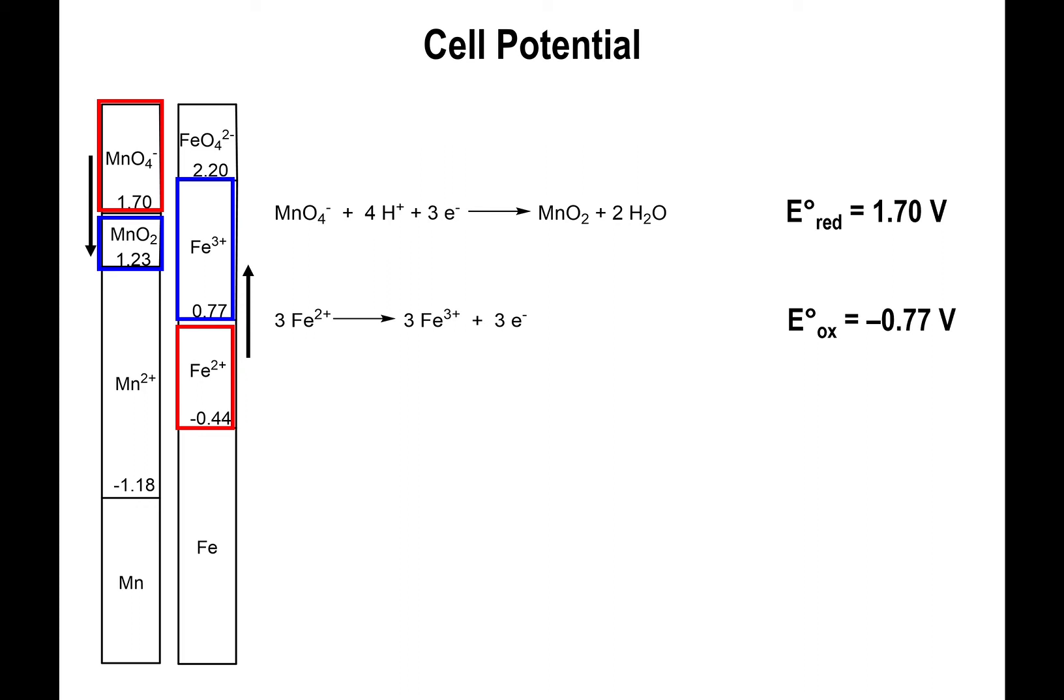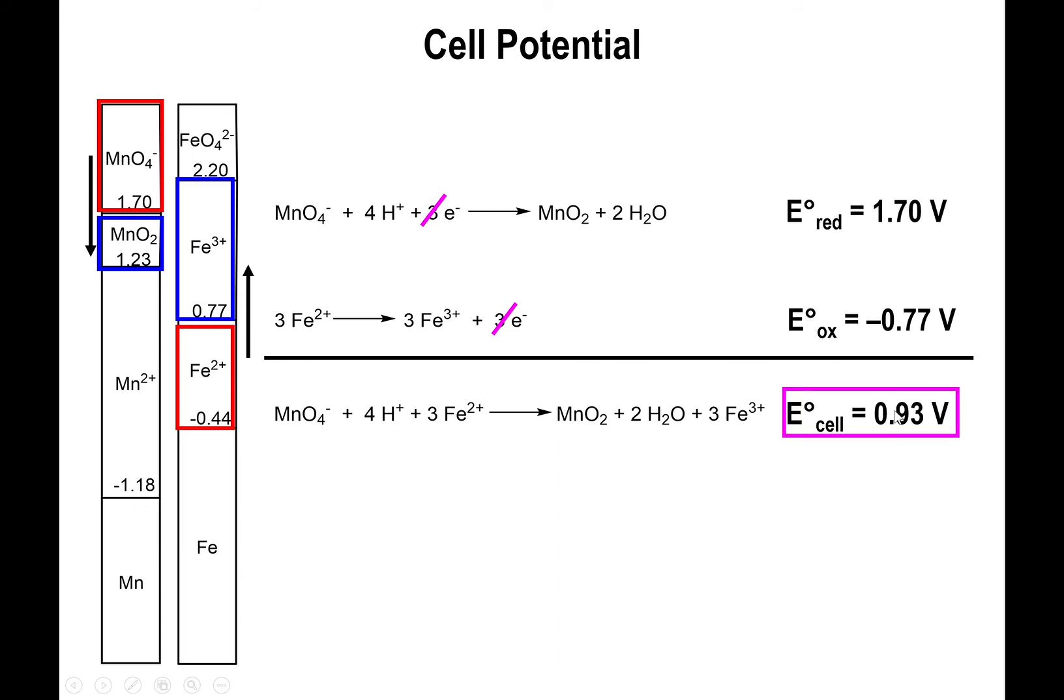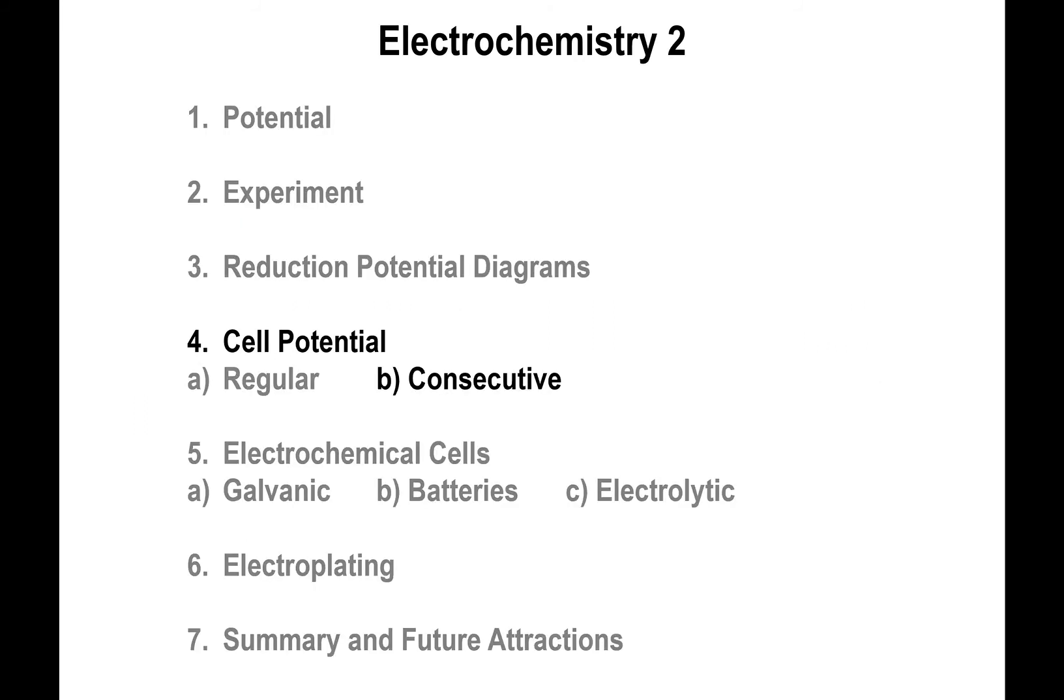And the moment that you have them as one of them reduction, the other one as oxidation, what you do is you add up the reactions together, the electrons cancel out, you have your overall reaction right here, and just the same way, you add up the reduction potential with the oxidation potential, which in this case means that the potential of that entire redox reaction is equal to 0.93 volts. So that's the simple case. That's when you're going up one step and down one step.